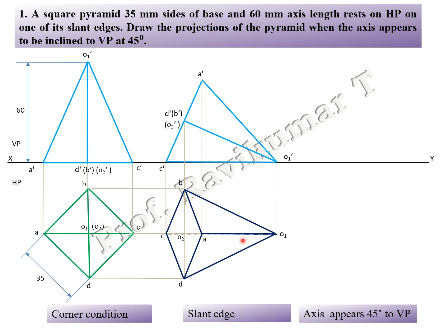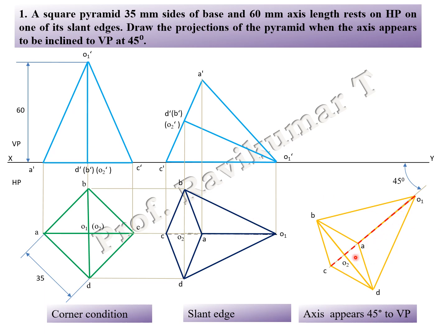The axis is inclined to VP at 45 degrees. Take a 45-degree line, then take this axis and incline it. The red lines are dotted lines. Actually A to O is also visible, so this should be a visible line — the hidden line is overlapping with the visible line. Next, draw projection lines upward.